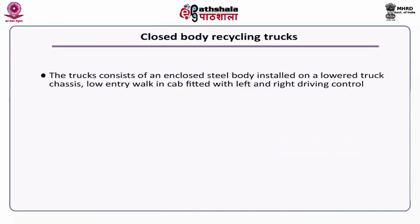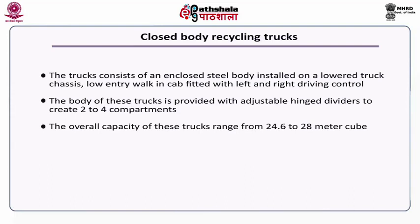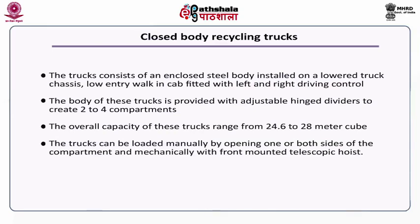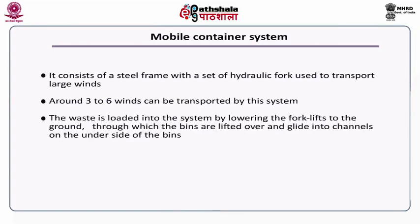The next type of specialized vehicle is a closed body recycling truck. The truck consists of an enclosed steel body installed on a lowered truck chassis with a low entry walk-in cab fitted with left and right driving control. The body is provided with adjustable hinged dividers to create two or four compartments. The overall capacity ranges from 24.6 to 28 meter cube. The trucks can be loaded both manually by opening one or both sides of the compartment, and mechanically with front mounted telescopic hoist. The next type is a mobile container system, consisting of a steel frame with hydraulic forks used to transport large bins of waste, and around three to six bins can be transported by this system.